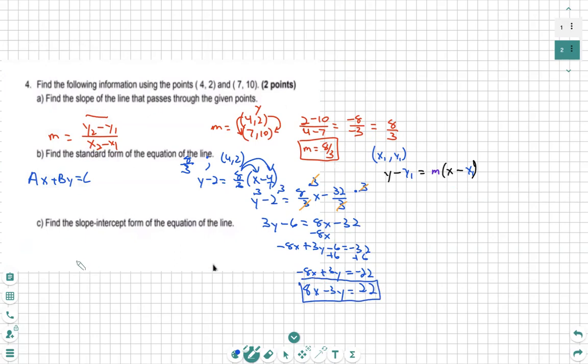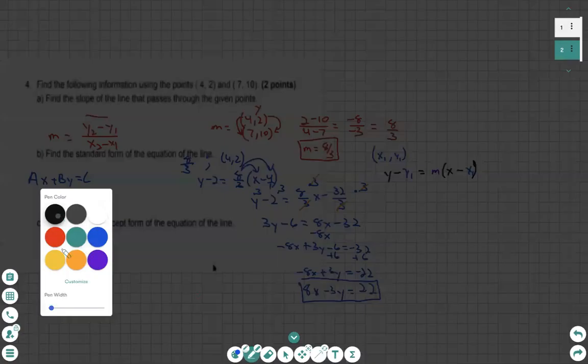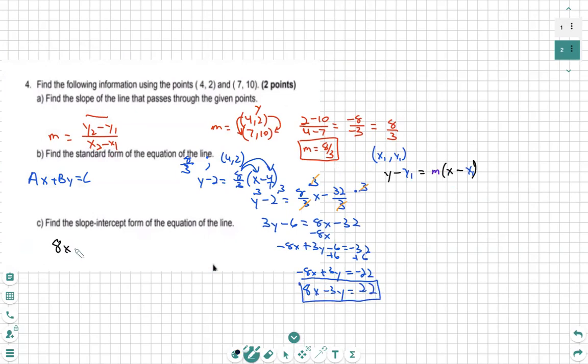Next, in slope intercept form, let's just take it from standard form so there's no confusion. We just need it in y equals mx plus b. So I'll move our 8x over. Divide by negative 3. And we have y equals 8 over 3x plus negative 22 over 3. And there you go. That is how you solve that problem.